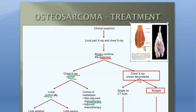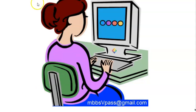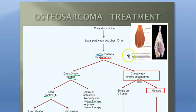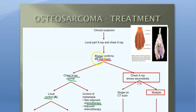Now for the treatment of osteosarcoma: when you have a clinical suspicion, you order a local X-ray and also a chest X-ray to check for metastasis. On X-ray, you will see the sunburst pattern and Codman's triangle. Then you take a biopsy from the bone to confirm the diagnosis - confirming osteoid formation, tumor giant cells, and pleomorphic sarcoma cells.